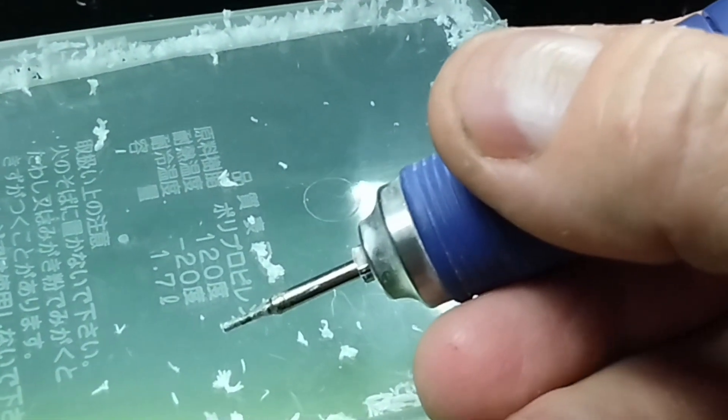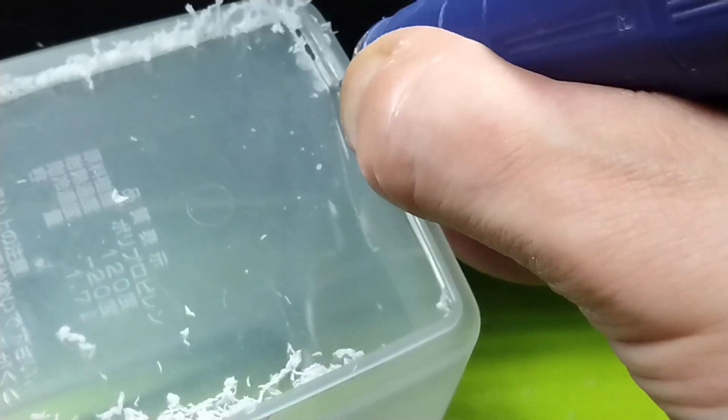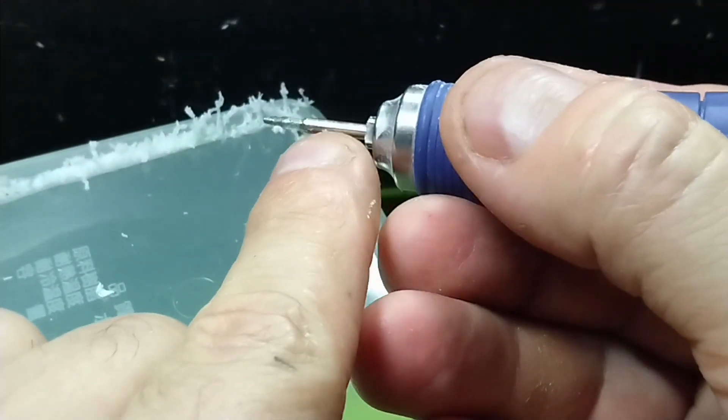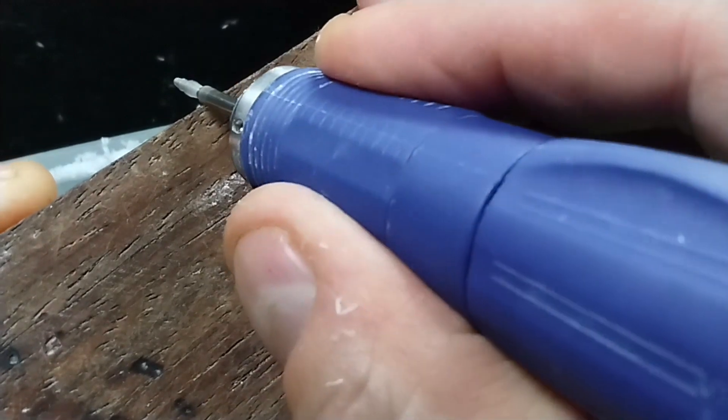If you have a Dremel or micromotor that has a 2.3 mm collet you can use a diamond bit. It will cut very well but go slowly or you'll get melted plastic on the bit. Clean the bit off like this.